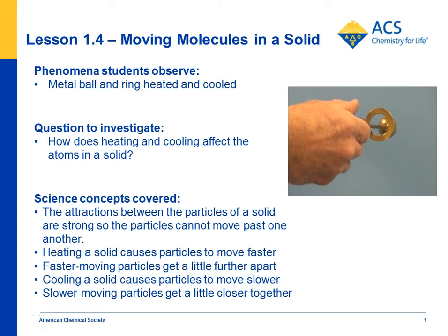In lesson 1.4, students see that a room temperature ball passes through a room temperature ring, but then when you heat this metal sphere, it won't pass through the ring anymore. So the question is, why is that? What's going on with the particles that make up the solid metal that causes that to happen?